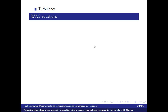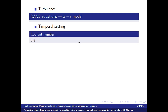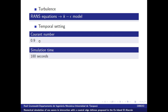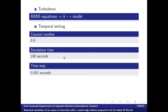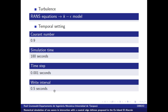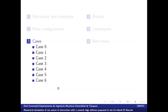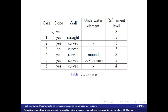Turbulence is achieved through the RANS equations and the K-Epsilon model. The temporal settings include a Courant number of 0.9, a simulation time of 180 seconds (3 minutes), a time step of 0.001 seconds, and a write interval of 0.5 seconds, so data is written every 0.5 seconds. There are 7 cases in total, from case 0 to case 6.